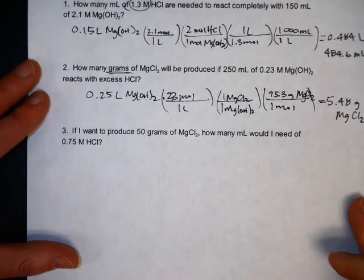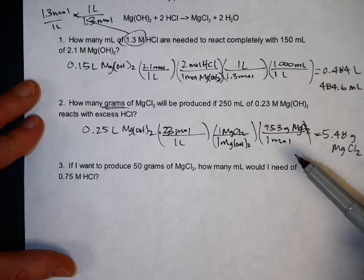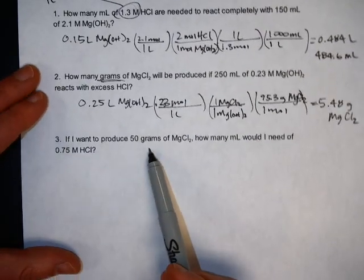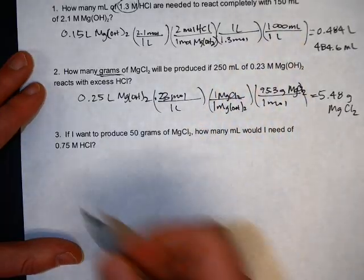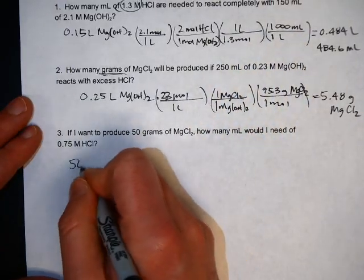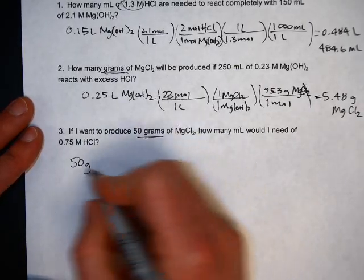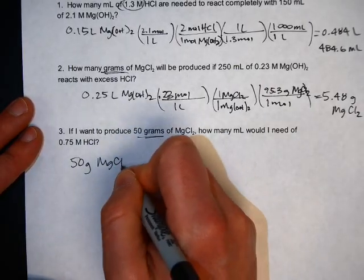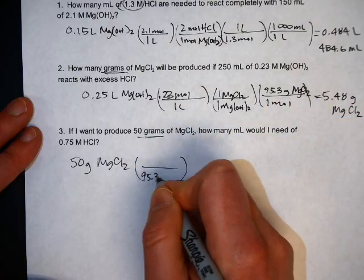And the last problem, well, the last problem you're going to start with grams, and you're going to end with milliliters. So it's going to end like this problem, but start with grams instead. So 50 grams, see how it says grams. Don't start with a capital M number. Leave that for later. 50 grams of MgCl2. I want to get into moles, and so I divide by the molar mass, which we just found out was 95.3 grams.